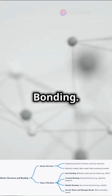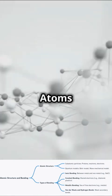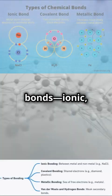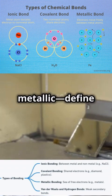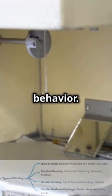Next, atomic structure and bonding. Atoms and their bonds — ionic, covalent, or metallic — define material behavior.